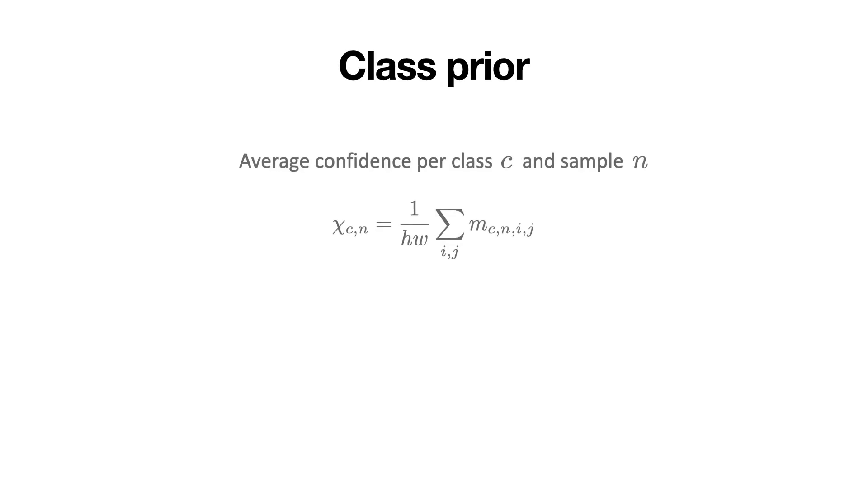To compute the class frequency, we first compute the average confidence in a given sample for this class. During training, we maintain an exponentially moving average of this value for each class to approximate the class prior in the complete dataset.